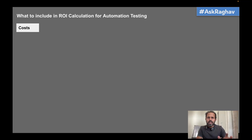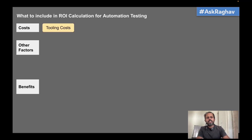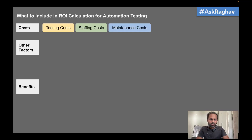Before I show the template, let us see what areas you should focus on when creating a template or doing return on investment analysis. We have categories: costs, other factors, and benefits. When we talk about cost, it can be tooling cost, platform cost, staffing cost, how many people are required, how much time and effort, man hours, and maintenance costs after setting up the automation framework and platform.